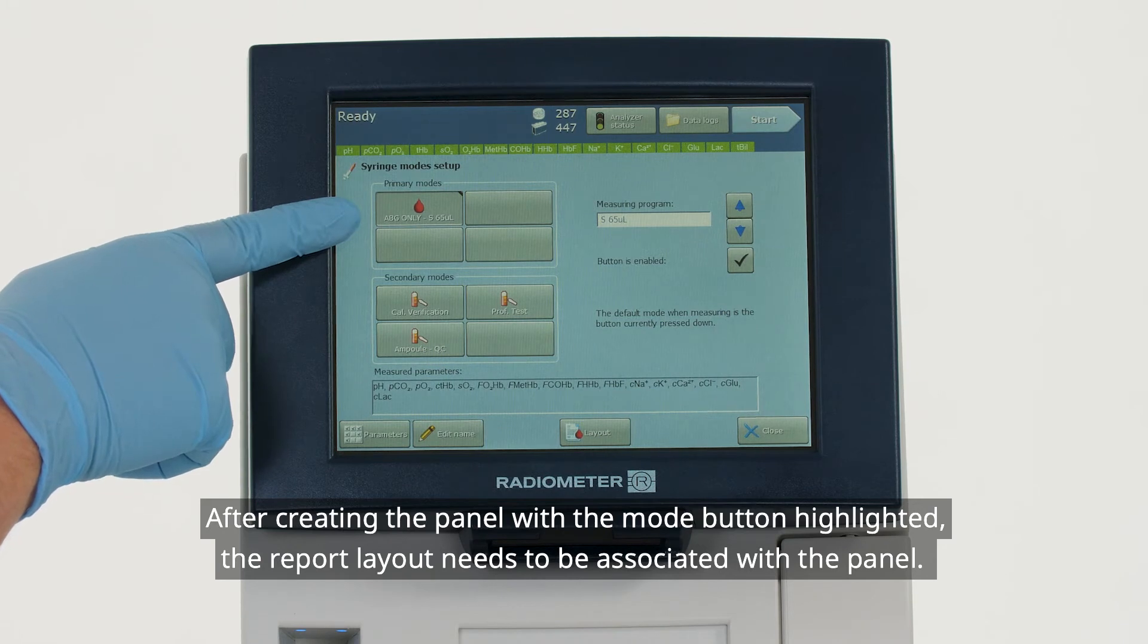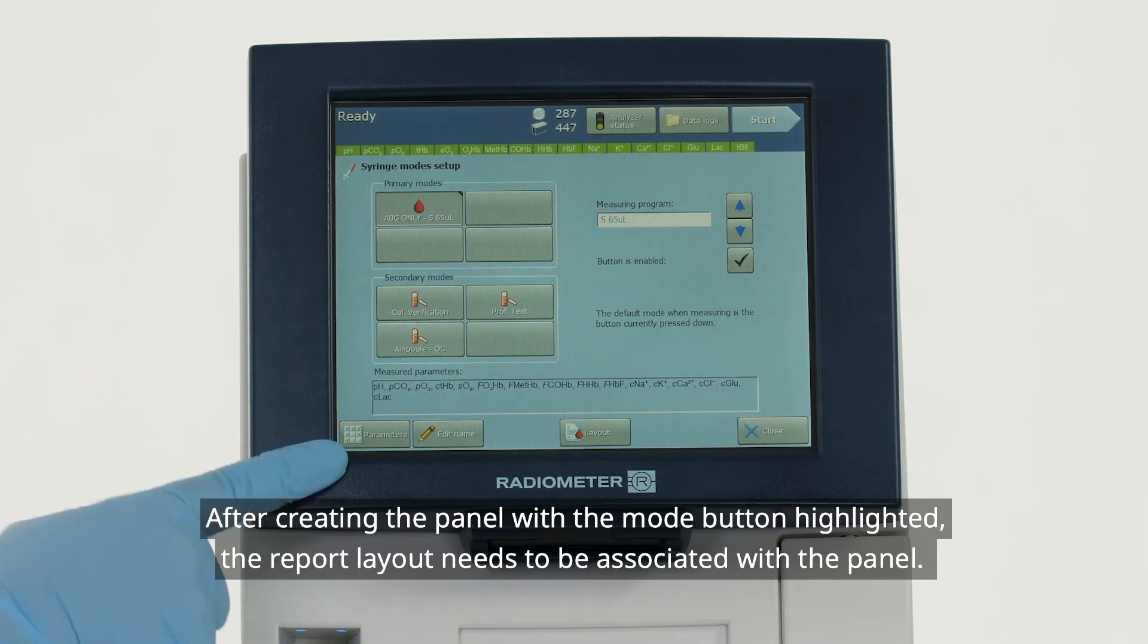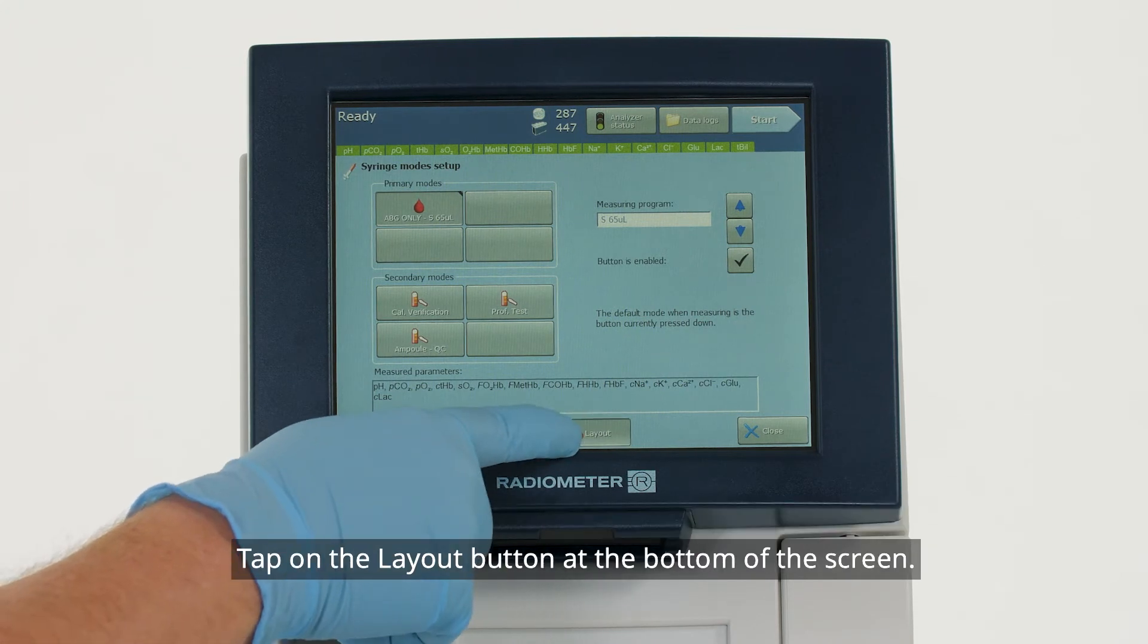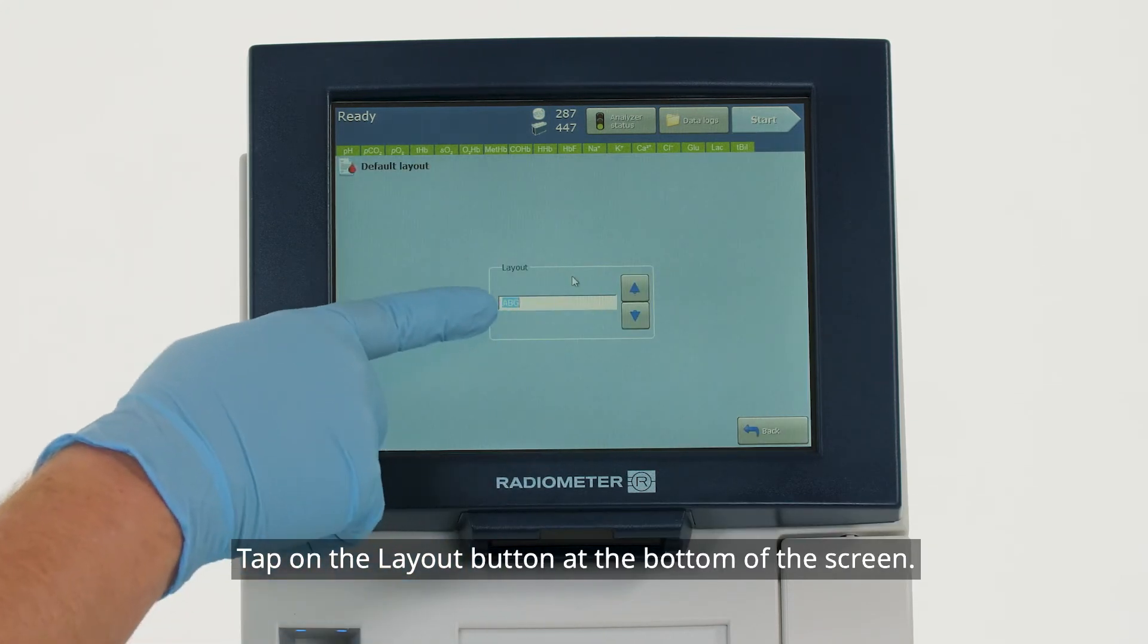After creating the panel with the Mode button highlighted, the report layout needs to be associated with the panel. Tap on the Layout button at the bottom of the screen.